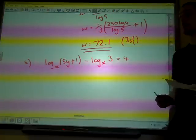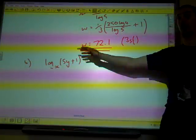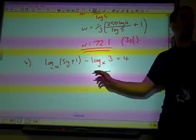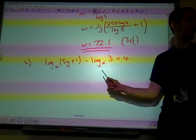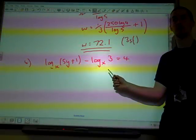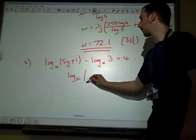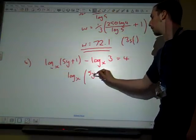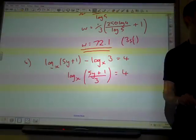So we need to end up saying y equals. Okay, before we do anything else with this, we need to get this to be a single log term. So we need to combine these two things together. What do we do if we're subtracting two things with the same base? Divide. So log base x of 5y plus 1 over 3 equals 4.